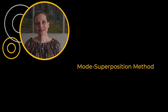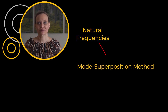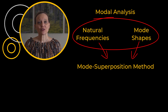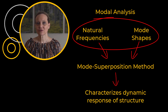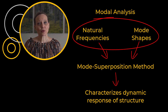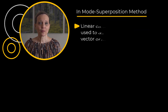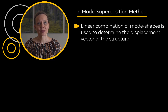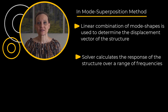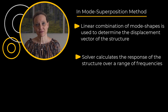Mode superposition is a method of using the natural frequencies and mode shapes from the modal analysis to characterize the dynamic response of the structure to transient, harmonic, response spectrum, and random excitations. In the mode superposition method, a linear combination of mode shapes is used to determine the displacement vector of the structure. Using this technique, the solver calculates the response of a structure over a range of frequencies.